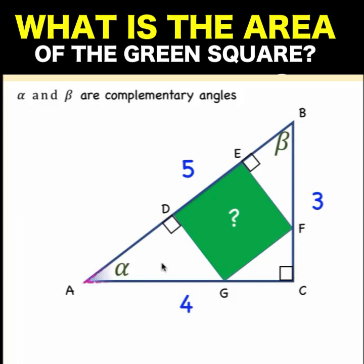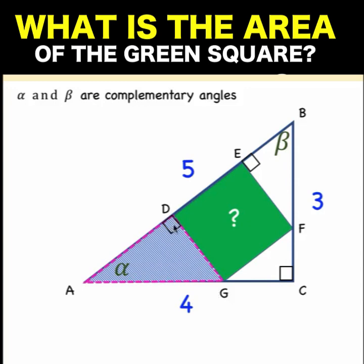Next, let's focus our attention to triangle ADG. Here is the right angle. This is alpha. This remaining angle here, angle AGD, must be the complement of alpha. And what is the complement of alpha? That is beta. So the angle here must have a measure of beta.